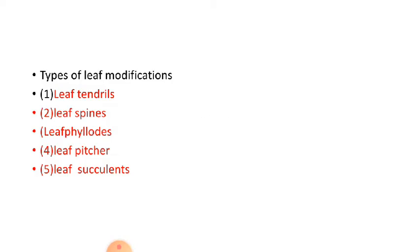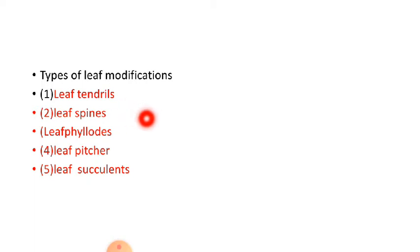The types of leaf modifications are: leaf tendrils, leaf spines, leaf horites, leaf pitchers, leaf phyllodes, and storage leaves. We will deal with them one by one.